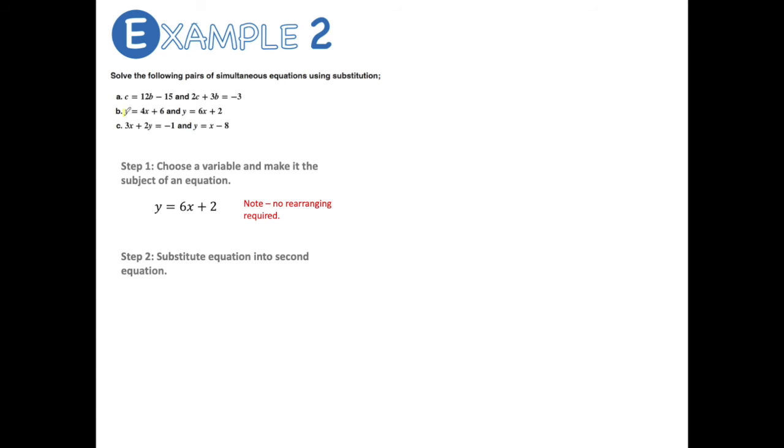Looking at the second example, we've got y equals 4x plus 6 and y equals 6x plus 2. Both equations already have y as the subject, so I'm going to choose y equals 6x plus 2 — you could also choose y equals 4x plus 6 and reach the same solution. No rearranging is required because y is already the subject. For step two, because I've chosen y equals 6x plus 2, I'm going to substitute that into y equals 4x plus 6, giving 6x plus 2 equals 4x plus 6.